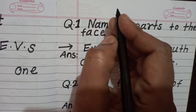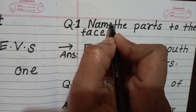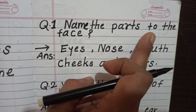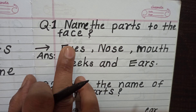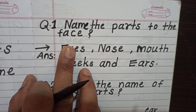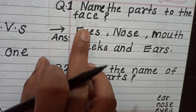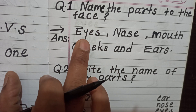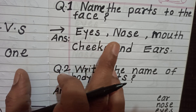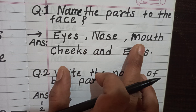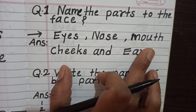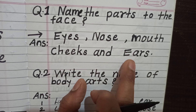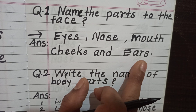Name the parts of the face. Your teacher will ask you about face parts. The answers are: Eyes — E-Y-E-S, eyes. Nose — N-O-S-E, nose. Mouth — M-O-U-T-H, mouth. Cheeks — C-H-E-E-K-S, cheeks. And ears — E-A-R-S, ears.